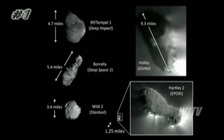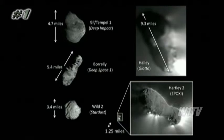We've got Borley, Wild 2, and Hartley 2. We've also got Halley and Temple 1, which I'll talk about in just a few minutes. The point of this slide is to give you a scale of these objects. They are only a few miles across; the largest comet nuclei are probably tens of miles across. Not very large — so a comet in itself is really a relatively small object.